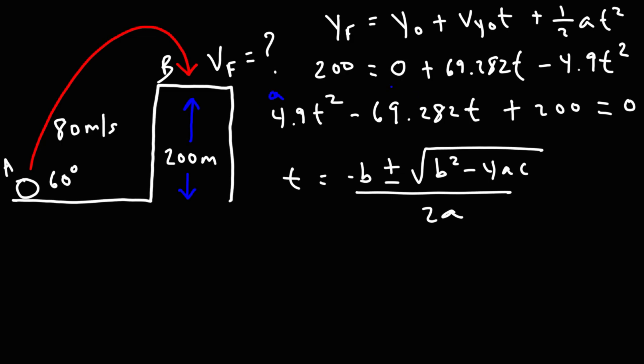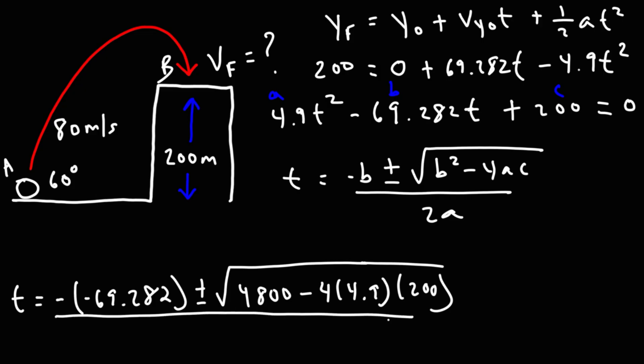Now in this example, a is 4.9, b is that number, c is 200. That's 4800, 69.282 t squared. And c is 200. And this is divided by 2 times a. a is 4.9.